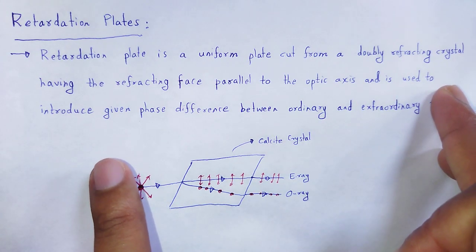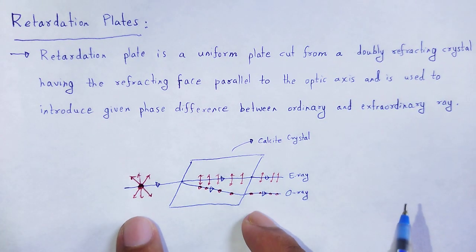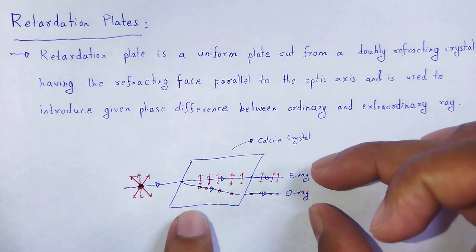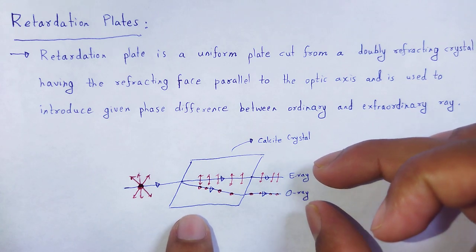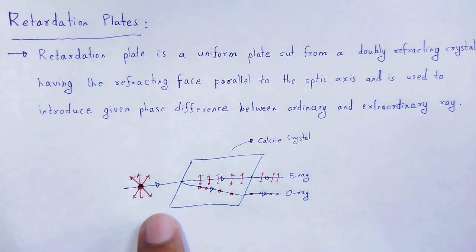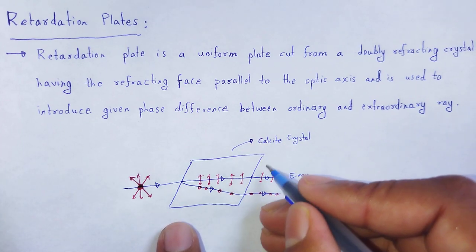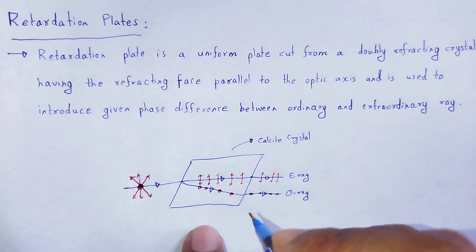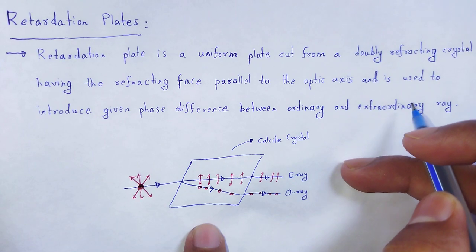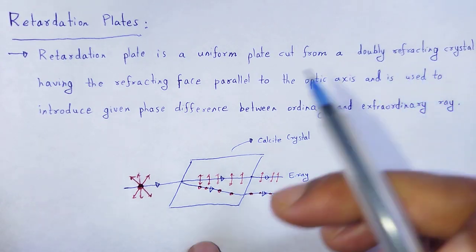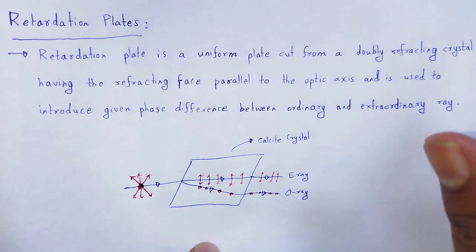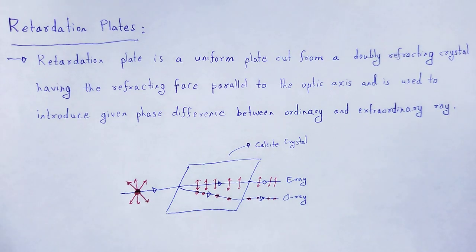As a result, a phase retardation between the two waves is introduced when the waves pass through a certain thickness of the plate. That thickness determines what the path difference will be between E ray and O ray. On that basis, we divide the retardation plate into two categories: one is the half wave plate and the other is the quarter wave plate.